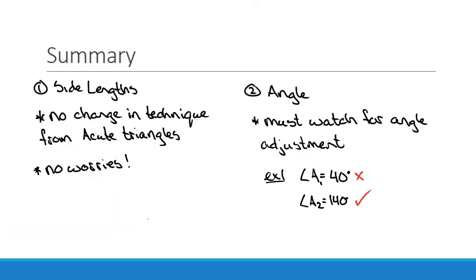Hi again, everybody. I know I signed off once, but then I decided I should write up the things I was saying. So here it is. In summary, when you're looking for side lengths using the sine law, there's no change in technique from the acute triangle. So there's no worries. So keep doing what you're doing. But when you're looking for an angle, you have to watch for that angle adjustment. So my example is, you might solve and have an angle of 40 degrees, but then you realize, no, that's wrong. It should be obtuse. So I have to choose 140 degrees. All right, I hope that makes a little bit more sense. Now, have a good night.